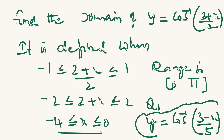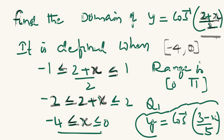One example based on this: Find the domain of y = cos⁻¹((2 + x) / 2). The argument is (2 + x) / 2. For cos⁻¹ to be defined, it should lie between -1 and 1: -1 ≤ (2 + x)/2 ≤ 1. Multiplying by 2: -2 ≤ 2 + x ≤ 2. Adding -2: -4 ≤ x ≤ 0. So the domain of this function is [-4, 0].